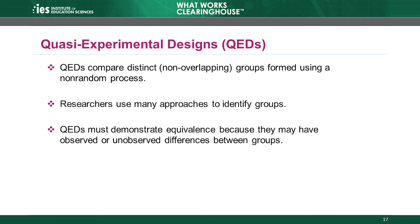Another research design eligible for review under WWC group design standards is a quasi-experimental design, or QED. Quasi-experimental design is one of those terms that means different things to different people, but the WWC has a specific definition. A quasi-experimental design is a study design that has at least two distinct, non-overlapping groups and did not use a purely random process to form the groups.